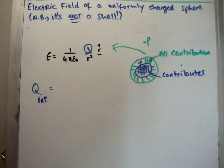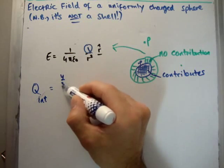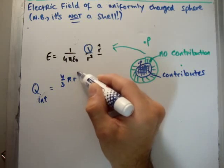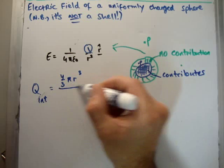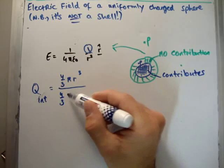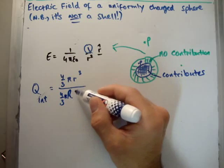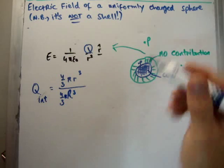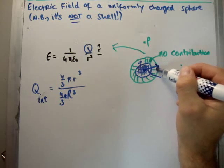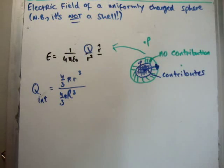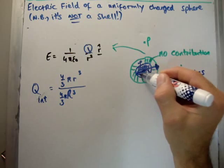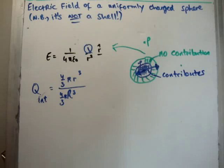It's 4 over 3 pi small r cubed divided by 4 over 3 pi times capital R cubed. So, capital R is from here out, that's the whole solid shell, whereas small r is just the radius inside here.